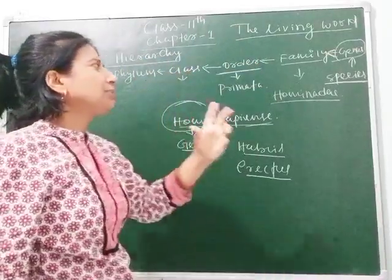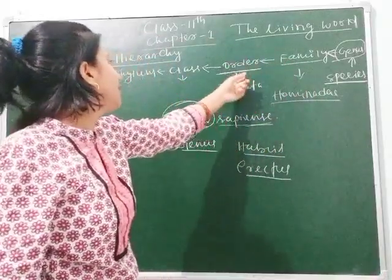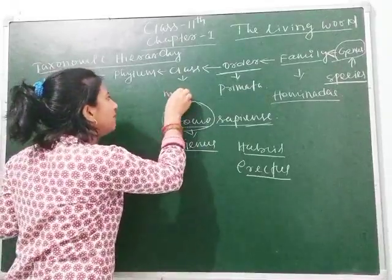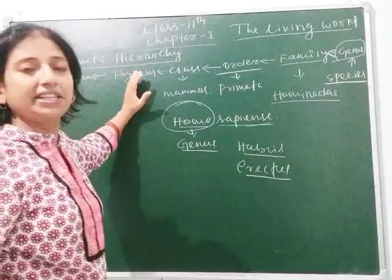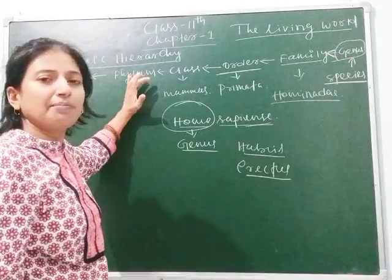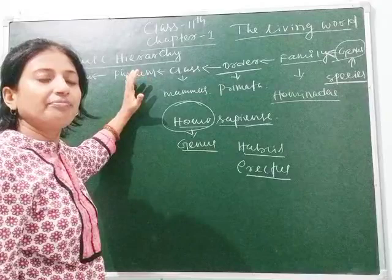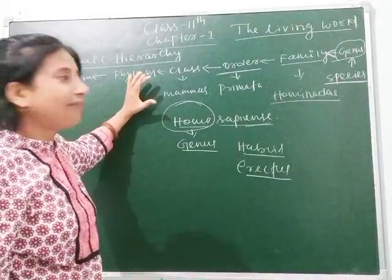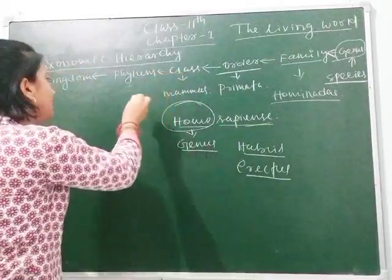Species combine to form genus, genus combines to form family, family combines to form order, order combines to form class. We are placed in class Mammalia. We are placed in mammals because we have mammary glands, hair, a vertebral column, and a four-chambered heart. That is why we are placed under class Mammalia. Our phylum is Chordata — we have a notochord, which is the solid structure present within the vertebral column. Some phyla together constitute a kingdom.